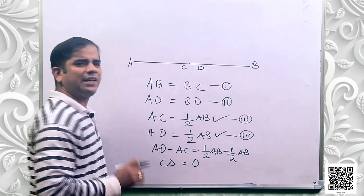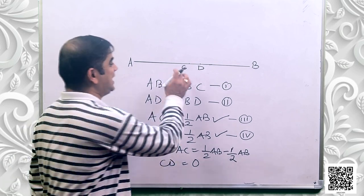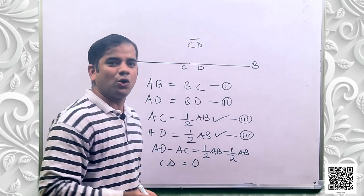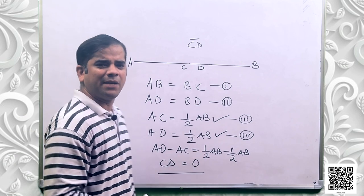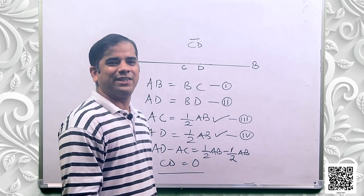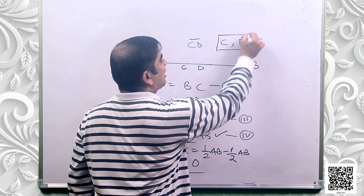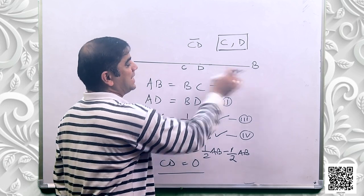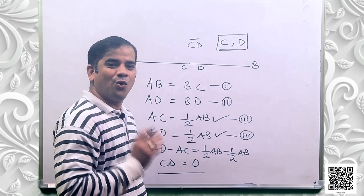CD is equal to 0. What does it mean? CD has no length at all. A line segment should have some amount of length, but we have proved that CD is equal to 0. That means C and D coincide with each other — point C and point D are coinciding points. That means there is a single midpoint of line segment AB.